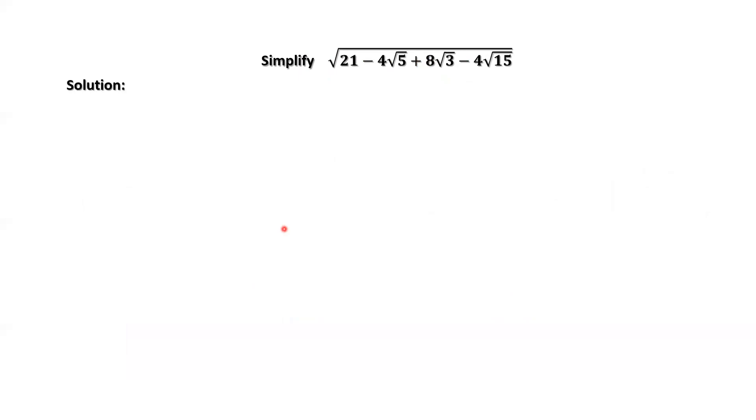Pay attention to the inside part of the square root. We have one, two, three square roots. Here, we are assuming the inside part of the square root equals square root of x plus square root of y minus square root of z, then square.